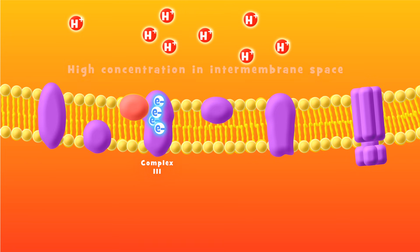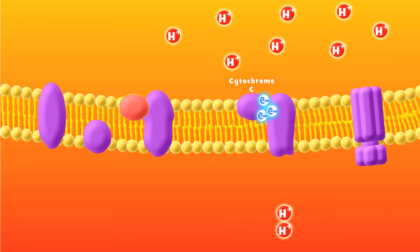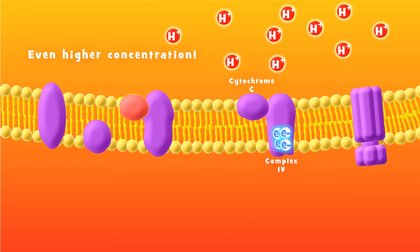Notice that we are building up a high concentration of hydrogen ions in the intermembrane space. This will be very important soon. Now the electrons are transported to a final protein complex, where their energy is used once again to pump hydrogen ions into the intermembrane space, making the concentration even higher.